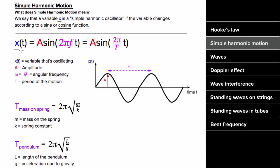The variable that's changing as a function of time — which could be the vertical position of a mass on a spring, the angle of a pendulum, or any other simple harmonic oscillator — equals the amplitude of the motion (the maximum displacement from equilibrium), times either sine or cosine of two pi times the frequency times t. Since frequency is one over the period, you could also write this as two pi over the period times t.